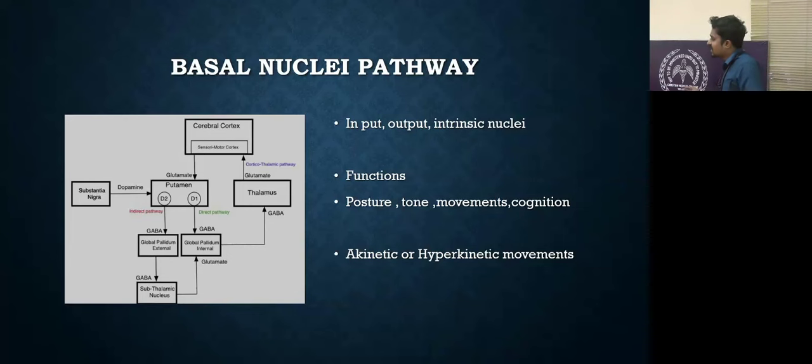The main functions of the basal ganglia were to maintain posture, facilitate tone and movements in relation to cognition. If anything is affected in the basal ganglia, it will cause two types: one is akinetic movements, or either hyperkinetic movements. Akinetic movements, example is Parkinsonism, due to defect in the dopaminergic pathways. Hyperkinetic movements are mainly due to defect in the GABAergic pathways, causing hyperkinetic movements like chorea, hemiballismus, athetosis, tardive dyskinesia.